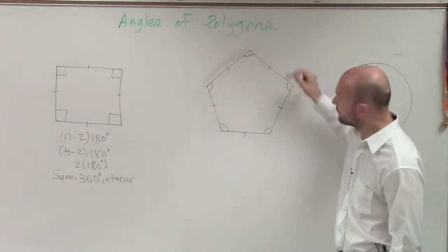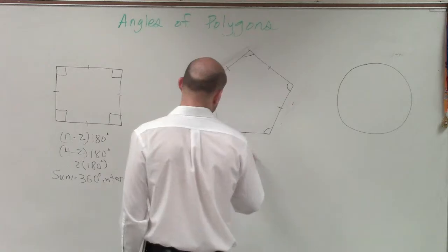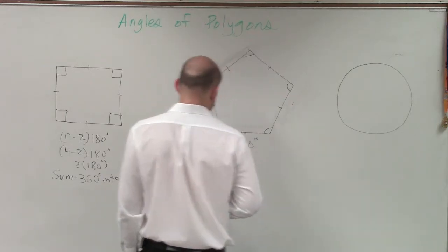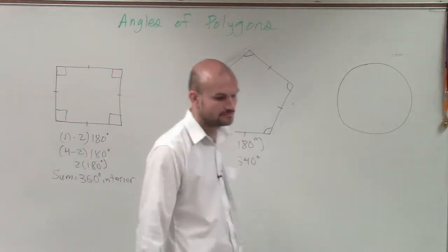Here I have 1, 2, 3, 4, 5. 5 minus 2 is 3, so I have 3 times 180, so that's going to be 540 degrees.